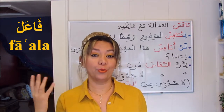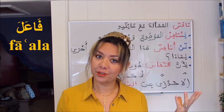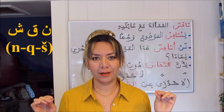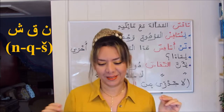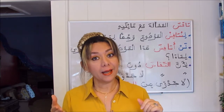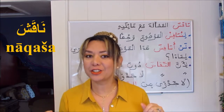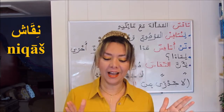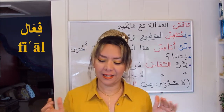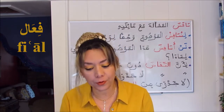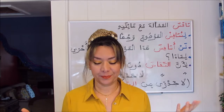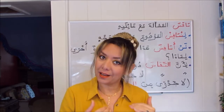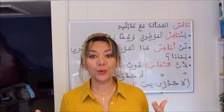One form is a verb and the other is a noun. From the root noon-qaf-sheen, the form-three verb naqasha is built, and so is niqash, following the pattern fi'al — a verbal noun that refers to a discussion, just as its verb naqasha refers to the action to discuss.